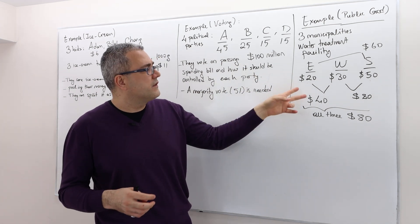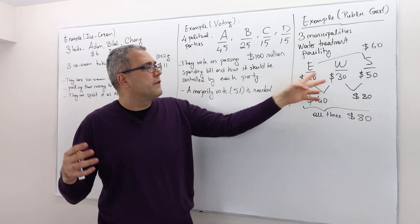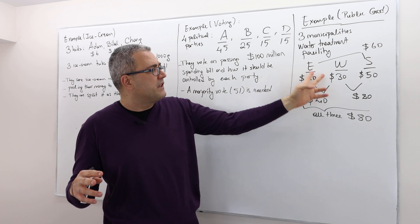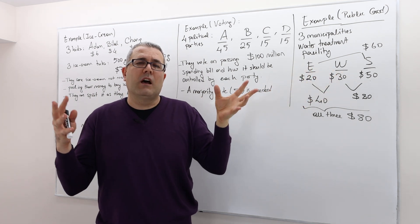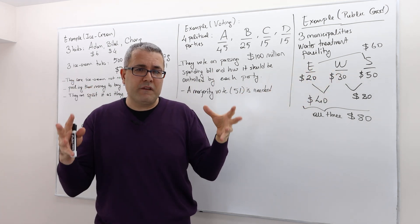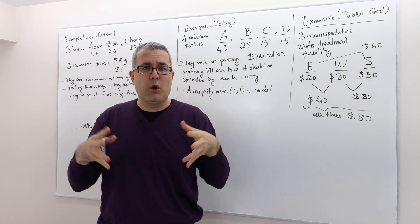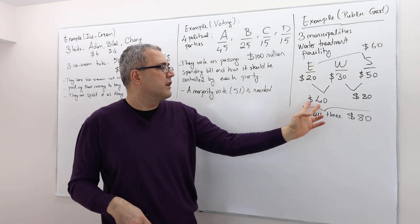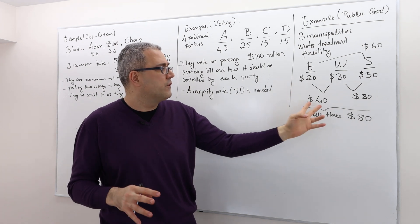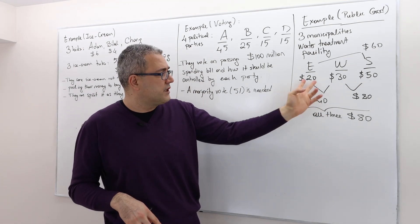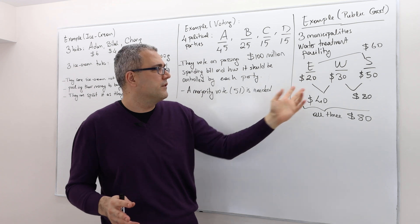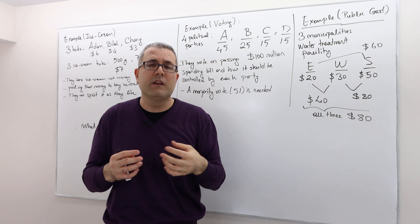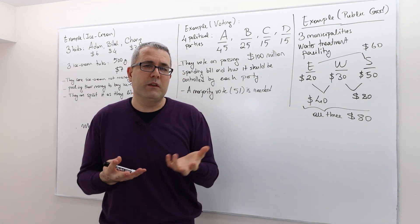However, they can pool their resources. So instead of building two different water treatment facilities, municipality E and W can get together and build one facility that is going to serve both of those municipalities. And if they do it, well, the total cost to them is going to be 40 million dollars, which is definitely better, right? Because if we do it individually, the total cost is 50 million, but if we do it jointly, the cost is going to be 40 million dollars.